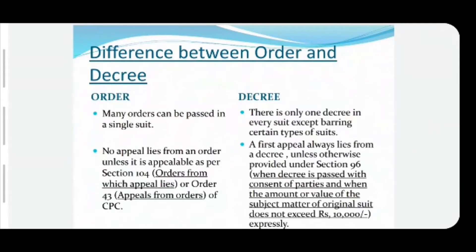Next difference: no appeal lies from an order unless it is appealable under section 104 or under Order 43 of the CPC. While in case of a decree, a first appeal always lies from a decree unless provided under section 96. Section 96 provides two conditions in which an appeal cannot be filed: first, when the decree is passed with the consent of the parties; and second, when the amount or value of the subject matter of the original suit does not exceed 10,000 rupees. In other cases, a first appeal always lies against a decree.